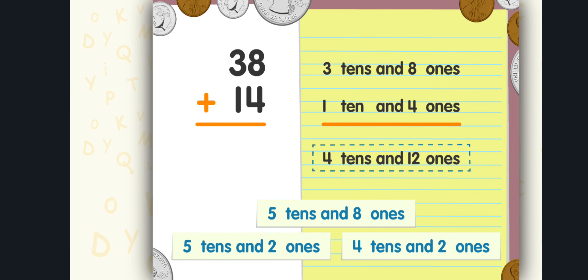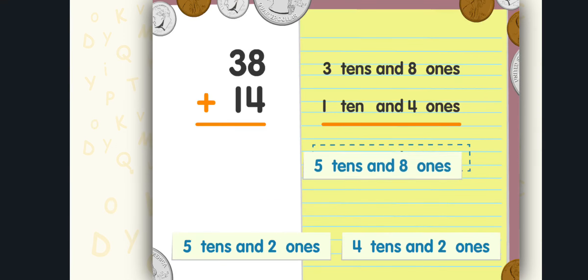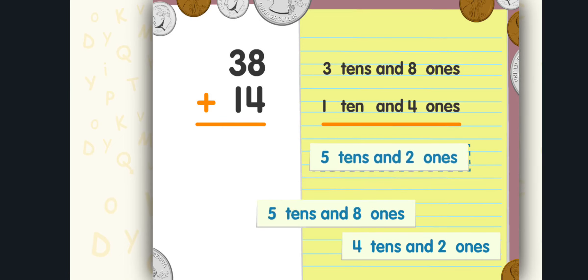Three tens and eight ones plus one ten and four ones equals four tens and twelve ones. Nice try! That's right! The sum is fifty-two.